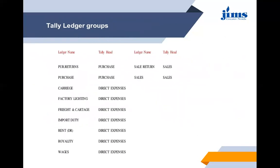These are the list of ledgers which are categorized accordingly when we prepare a ledger. The ledger name 'purchase return' — when we prepare a purchase return ledger, it is categorized under the Tally head 'purchase.' A purchase ledger is prepared and categorized under purchase. Sales return is categorized under sales, and sales is also categorized under sales. Whenever we create ledgers with different names, they are categorized accordingly depending upon the nature of that particular transaction. Carriage, being a direct expense, is categorized under direct expense.